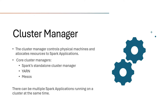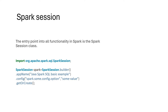So the three fundamental things when we talk about a Spark application are: driver, executor, and cluster manager. Now let's talk about Spark session. The entry point for any Spark application is the Spark session — we need to create an object of Spark session to start executing our Spark code. We can use languages like Java, Python, or R to write a Spark program. This is an example from Java where we import a package and create a Spark session object.